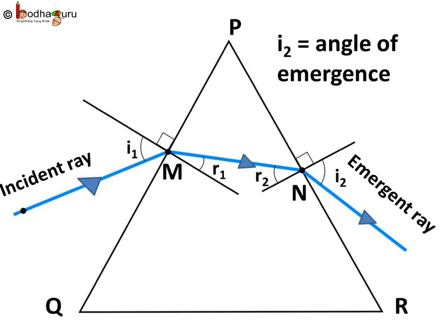What do we see here? The ray of light on refraction bends towards the normal. Now, the ray moves into the prism at side PQ and comes out of the opposite side PR at point N. It's called the emergent ray.